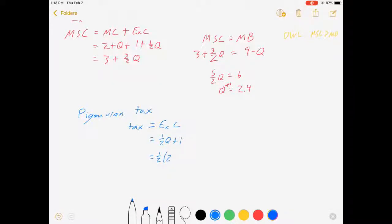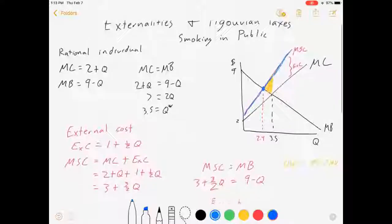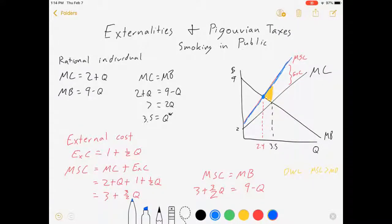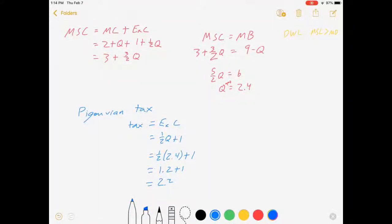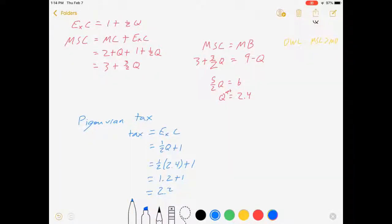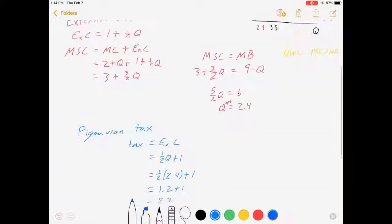So 1 half times 2.4 plus 1 is 2.2. So, if I were to want to restrict how much people are smoking at the door of my hospital to get them from 3.5 to 2.4, I would charge them $2.2 per, however we're measuring these units, I guess we're doing that by cigarettes, 2 extra bucks a cigarette.